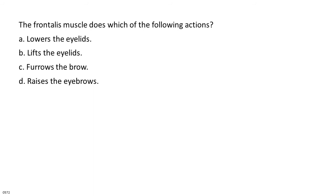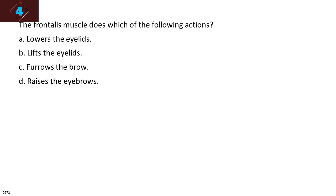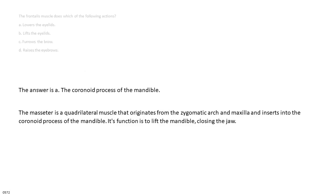The frontalis muscle does which of the following actions? A. Lowers the eyelids. B. Lifts the eyelids. C. Furrows the brow. D. Raises the eyebrows. The answer is A, the coronoid process of the mandible. The masseter is a quadrilateral muscle that originates from the zygomatic arch and maxilla and inserts into the coronoid process of the mandible. Its function is to lift the mandible, closing the jaw.